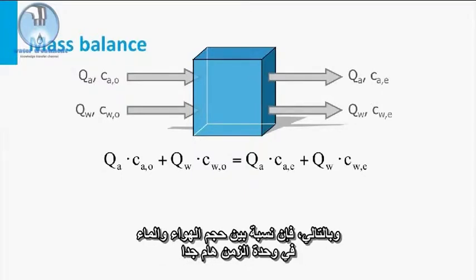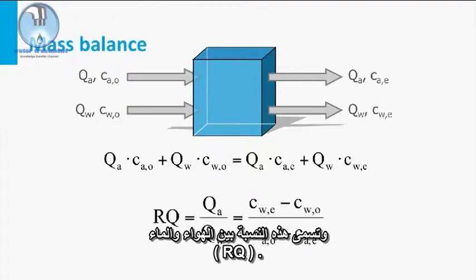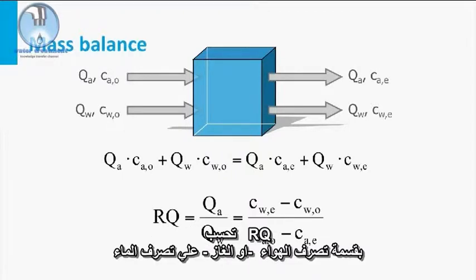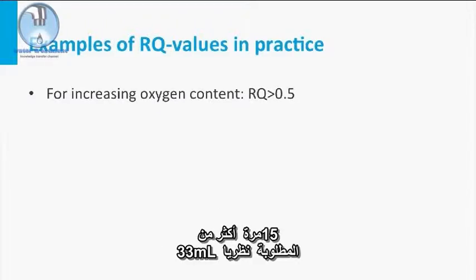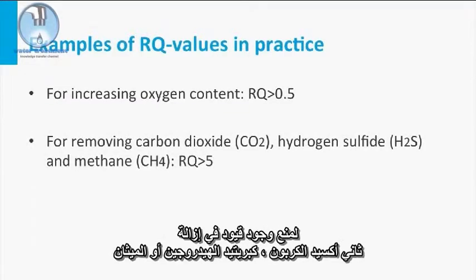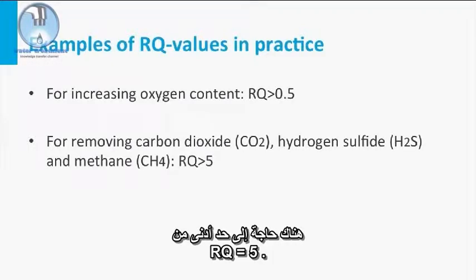Therefore, the volumetric air-water ratio per time unit is of importance. This air-water ratio is called RQ. RQ is calculated by dividing the air, or gas flow, by the water flow. In practice, an RQ of 0.5 is required for an increase in the oxygen content, which is 15 times more than the 33 milliliters that is theoretically needed. To prevent limitation in the removal of carbon dioxide, hydrogen sulfide or methane, a minimum RQ of 5 is needed.